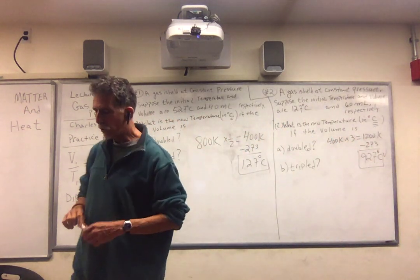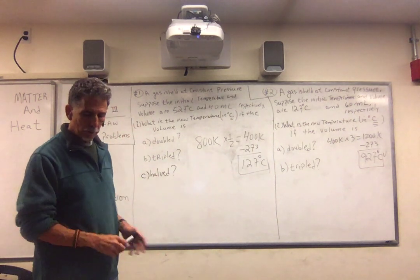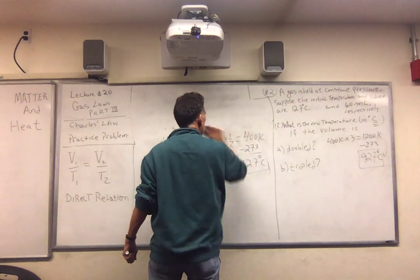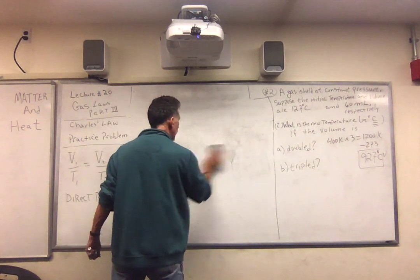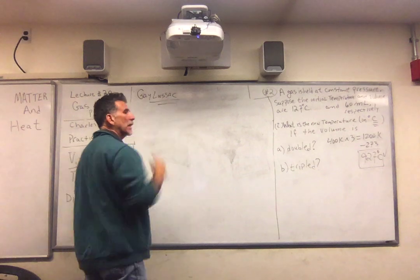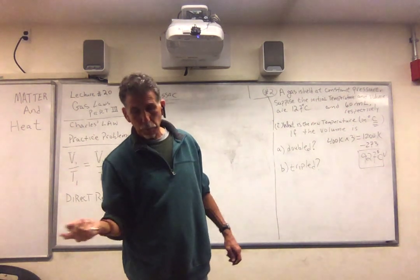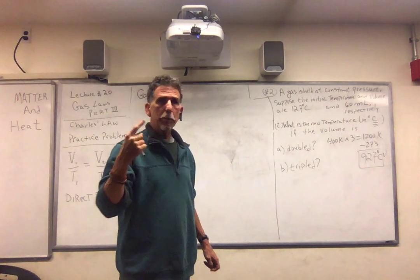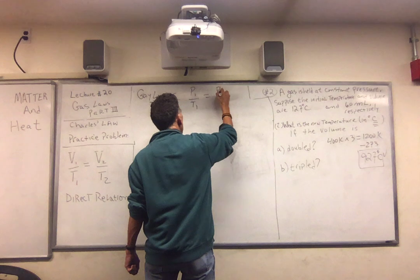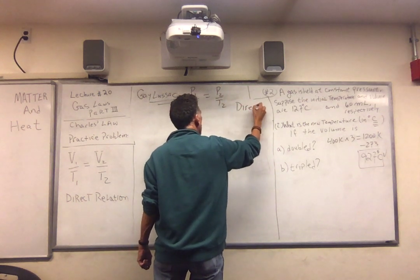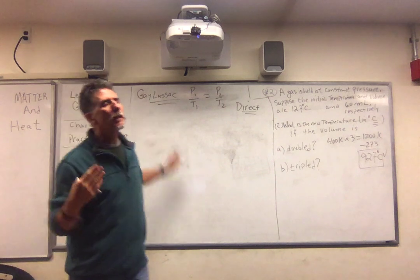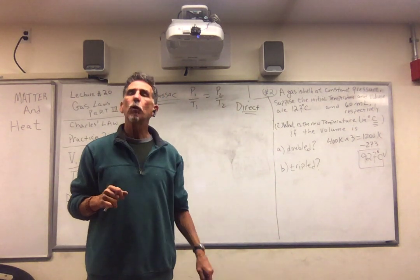And that is the gist of how we do Charles Law problems. Now let me quickly mention — because they're identical — these problems are identical when we do Gay-Lussac. Remember Gay-Lussac? That guy cares about volume, so it's constant volume. If we take the gas law PV over T and remove V, we're left with P1 over T1 equals P2 over T2. Once again, it's a direct relationship.